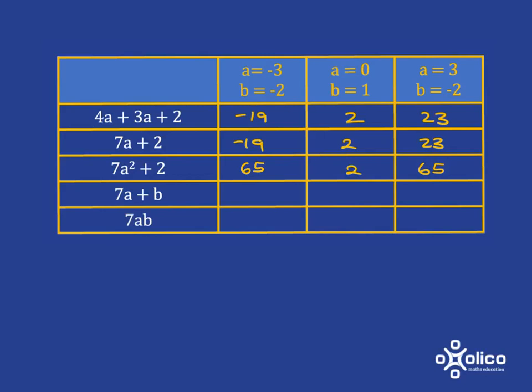For this 7a plus b, when a is negative 3, I'm going to have 7 times negative 3, which is negative 21 plus b, so plus negative 2. Negative 21 subtract 2 is going to give me negative 23.